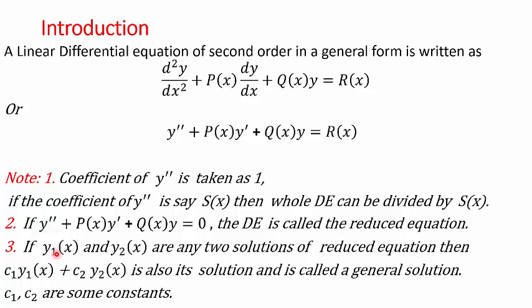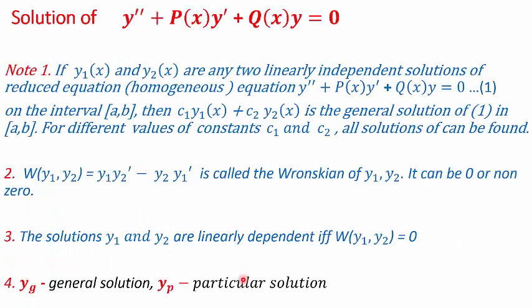The third point: if y1 and y2 are any two solutions of such a reduced homogeneous differential equation, then the linear combination c1·y1 + c2·y2 will also be a solution and it is called a general solution. c1 and c2 are some constants. We would be studying the homogeneous second order differential equation here.